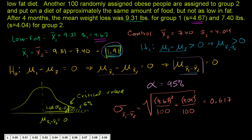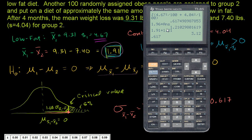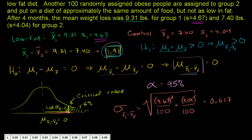So this critical distance is 1.65 times 0.617, which equals 1.02. This tells us that, if we assume the diet actually does nothing, there's only a 5% chance of having a difference between the two sample means of more than 1.02. The mean difference we actually got is 1.91, which sits out past the critical value, so it definitely falls in this critical region.